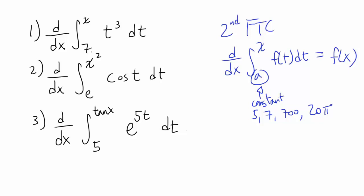The first one: derivative with respect to x of the integral from 7, which is constant, to x of t cubed dt. What's our function of t? That's t cubed. All we have to do is replace t with x. So our answer is going to be x cubed. That's easy.